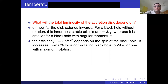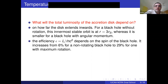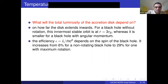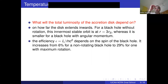The efficiency with which mass is converted into energy — L/(Ṁc²) — depends on the spin of the black hole. For a Schwarzschild black hole, the efficiency of energy conversion is a maximum of 6%, increasing to 29% for a maximally rotating black hole.